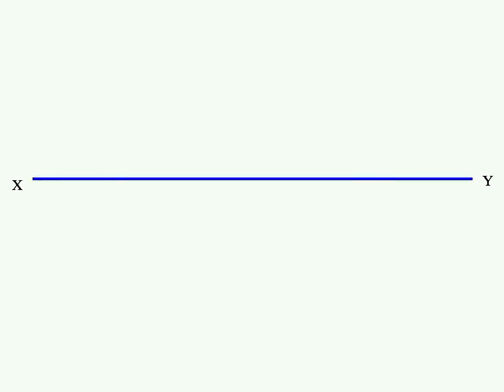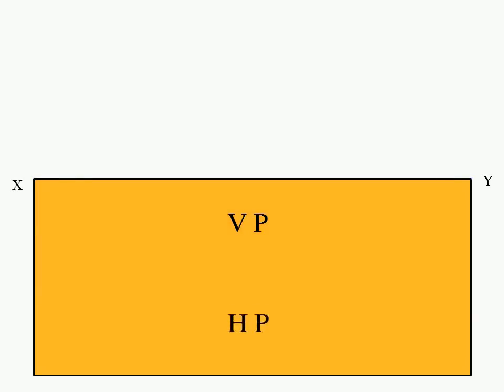Again for fourth quadrant, VP and HP will overlap below the reference line. So we do not use fourth angle method of projection.